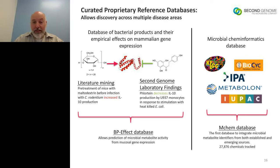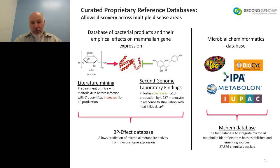For cheminformatics, we found that KEGG, BioCyc, IPA, Metabolon, and IUPAC have disagreeing nomenclature and identifiers, and many haven't well-organized microbial metabolites. So we built our own Rosetta Stone between them — we call it the MChem database — which tracks about 28,000 different microbial metabolites.